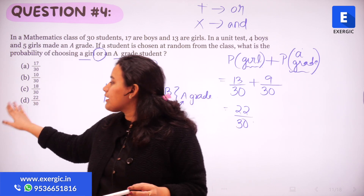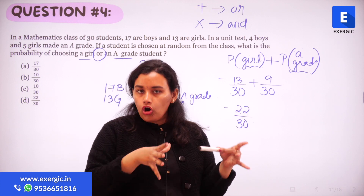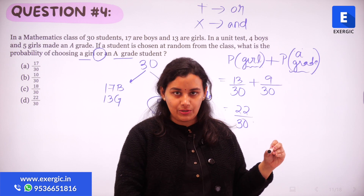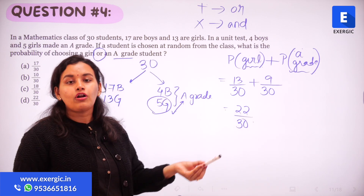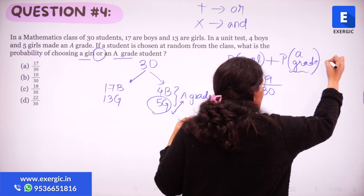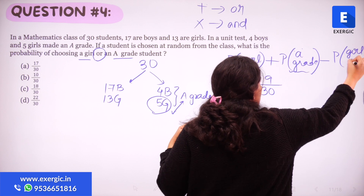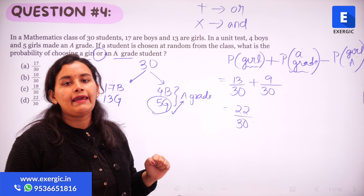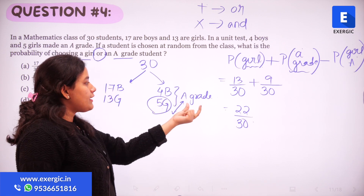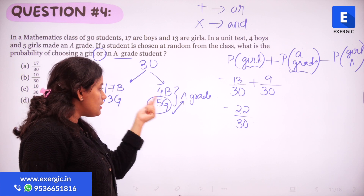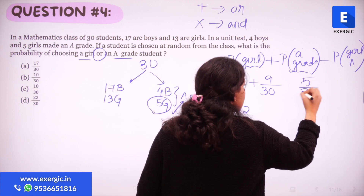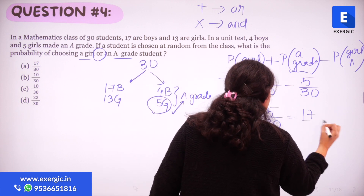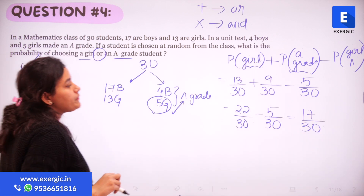So there is a double counting involved for these 5 girls. We want to find the probability of selecting either a girl or an A grade student. But what about those girls who are A grade students? That's an intersection between them. So how do we account for that double counting? We're going to subtract the probability of a girl who has got an A grade. How many girls have got A grade? 5 girls. So the probability is 5 upon 30, and we subtract this from the probability we calculated. So the correct answer is going to be 17 upon 30, which is option number A.